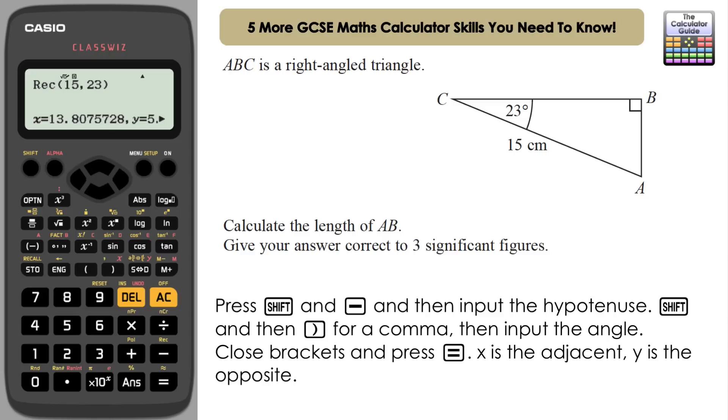And we actually get two results here. The first result, which says X there, that is the adjacent side. So in this case, it happens to correspond with the horizontal, but not always, so just be careful. But it's always going to be the adjacent side to the angle that we have. So the length that we have, CB, is 13.8, and then Y, that's the opposite side, which is the side that we're looking for. Calculate the length of AB, 5.86. So it's 5.86 to three significant figures.